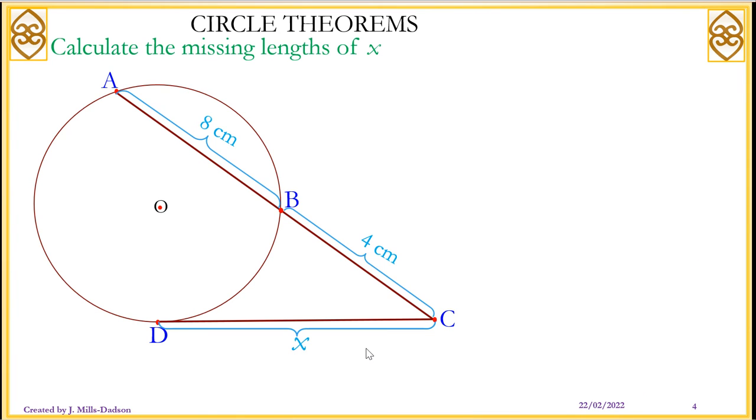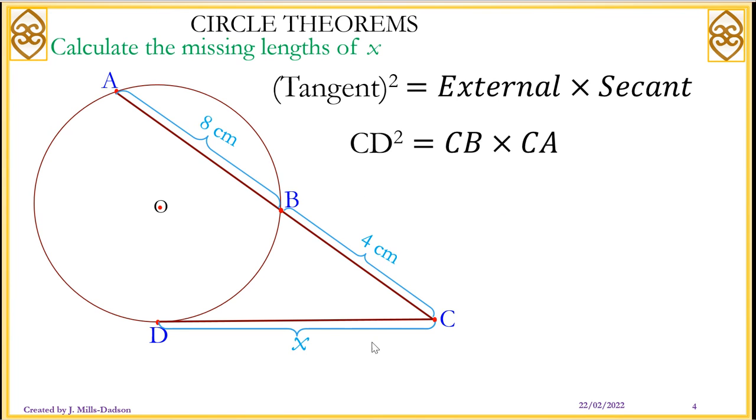Now let's look at this question. You're supposed to work out what X is. Start with your relationship. CD squared must be equal to CB times the full length of CA. CD represents what? X squared equals 4 times the full length, A plus 4 is 12. So 4 times 12. X squared is 48. So X is square root of 48, that is 4 root 3. And to 2 decimal places, X is 6.93 centimeters.